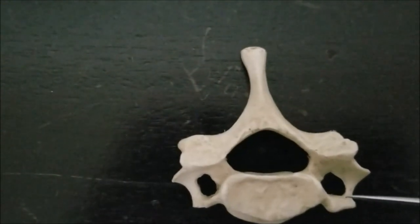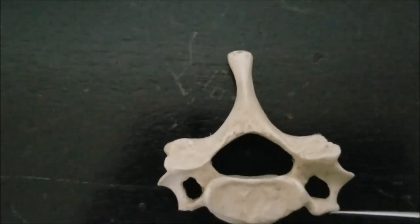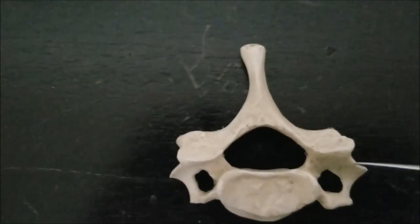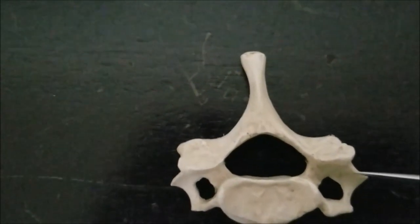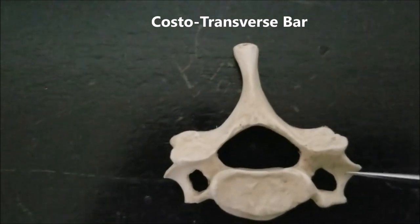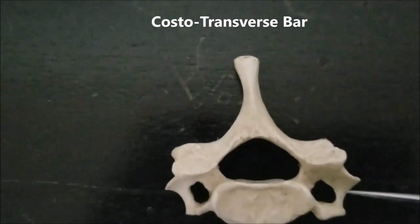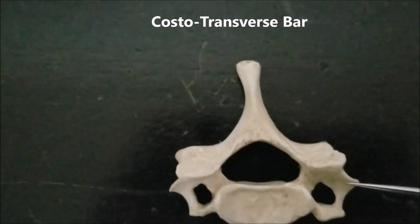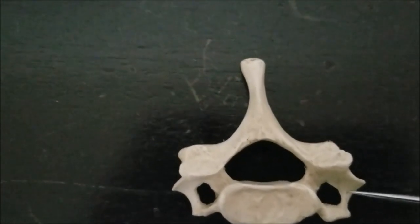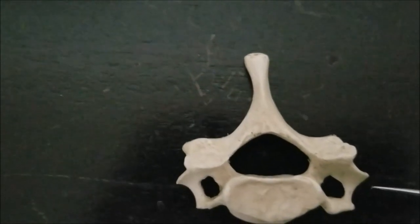This costal element is responsible for forming the true ribs in the thoracic region, but in the cervical region it forms part of the transverse process. The costal element and the transverse element are united by a bridge referred to as the costal transverse bar. If you look at the costal transverse bar, there is a smooth depression which gives passage to the ventral ramus of the spinal nerve.